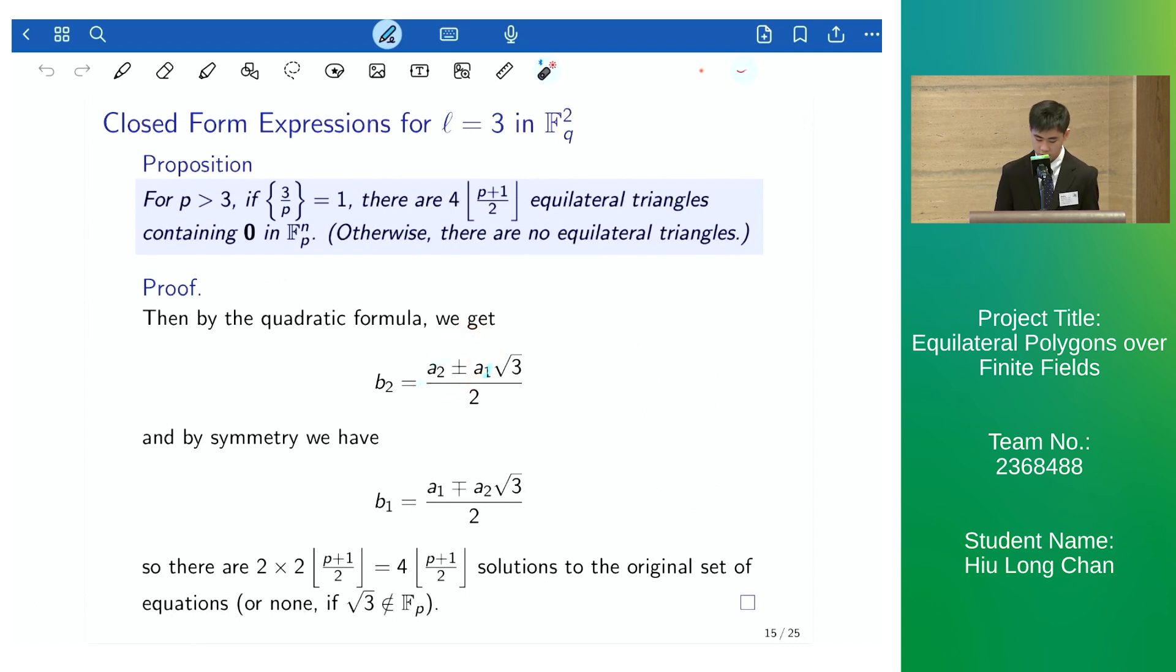And by symmetry, we also have two solutions for the other vertices that depend on b_2. So there are two times the number of points on the circle, and then we get the following proposition.